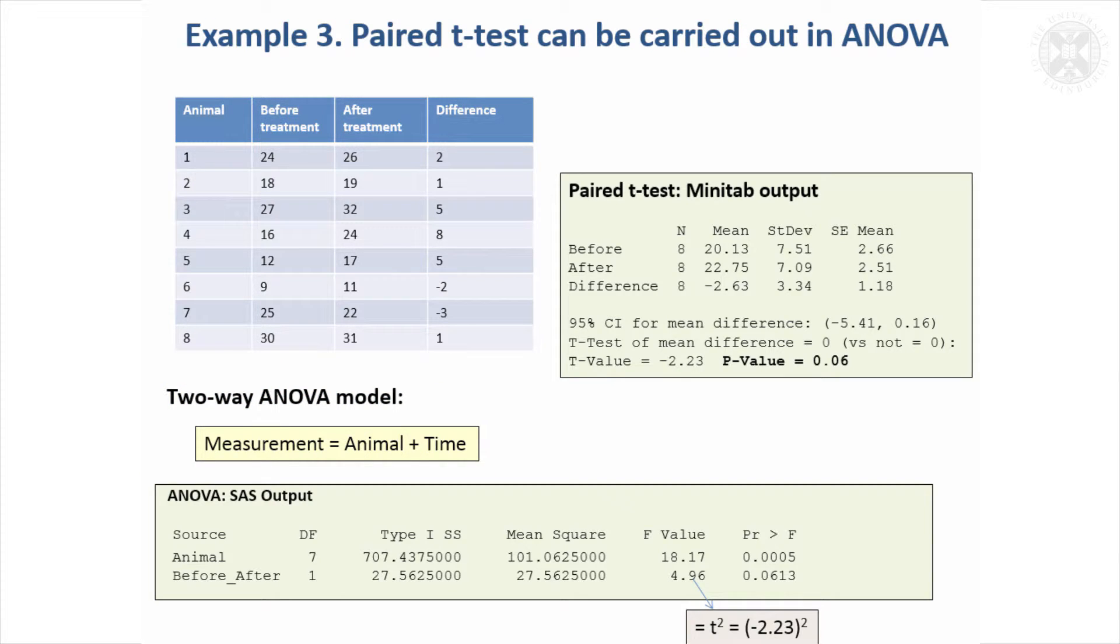The next slides have the output from the two analyses. This is the output we had last time. The paired t-test gave us a significant p-value, and the main thing to note here is that if you do the ANOVA and fit this model with animal fitted in the model, you get exactly the same p-value.